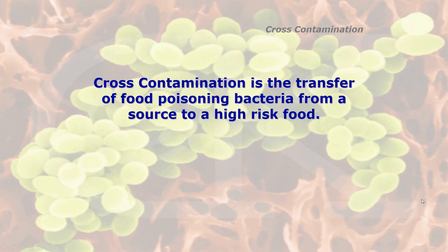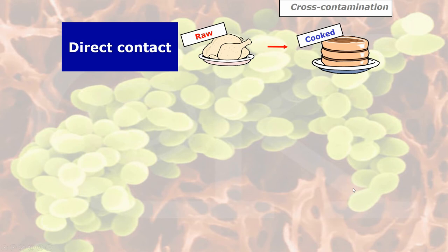What is cross contamination? Cross contamination is the transfer of food poisoning bacteria from a source to a high-risk food. An example is direct contact — such as raw chicken, which carries contamination on its skin especially Campylobacter, coming into physical contact with cooked, ready-to-eat food. That's one type of cross contamination: direct contact. Then there's indirect cross contamination, where the bacteria or contamination goes from the raw product to the cooked product via an intermediary such as a chopping board, a knife, or a cloth.